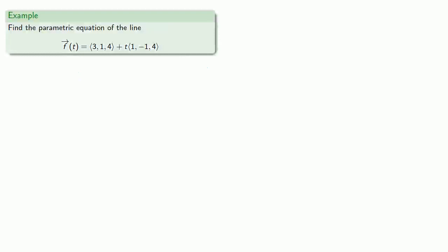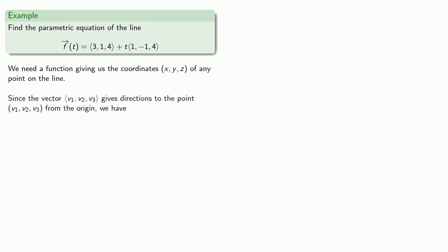So let's find the parametric equation of the line. We need a function giving us the coordinates (x, y, z) of any point on the line. Since the vector (v1, v2, v3) gives the directions to the point (v1, v2, v3) from the origin, we can take our function and write it as a single vector.